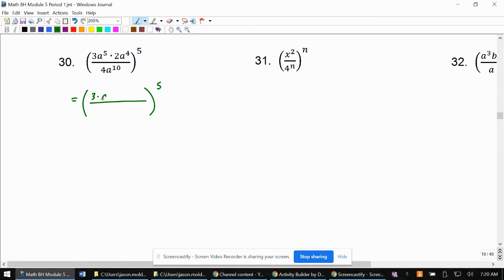So we have 3 times a to the fifth times 2 times a to the fourth over 4a to the 10th. That was also something I showed in a previous lesson, the 5.1b, that just separating these, because this times dot in the middle sometimes confuses people, helps us figure out what we're going to do.